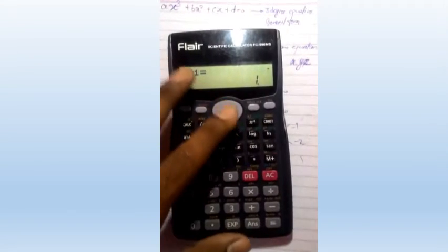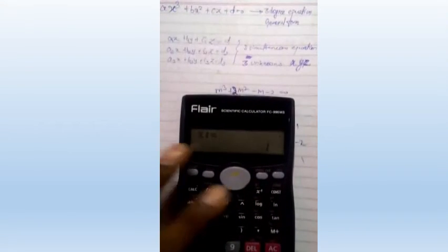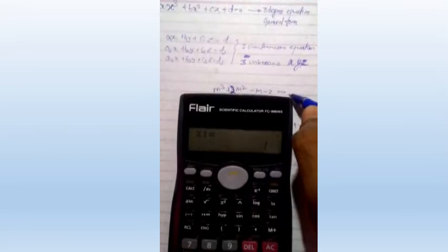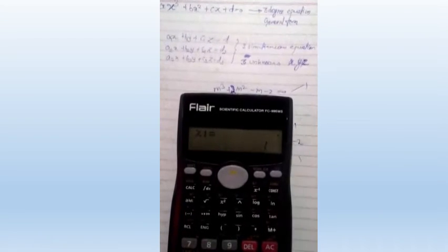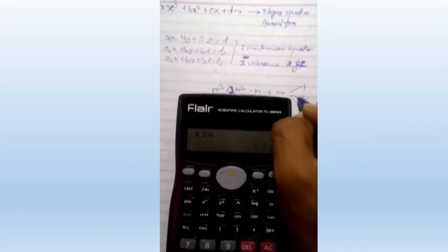If you click on equals, you'll get the three different solutions. The first solution is 1, the second solution is -2, and the third solution is -1.